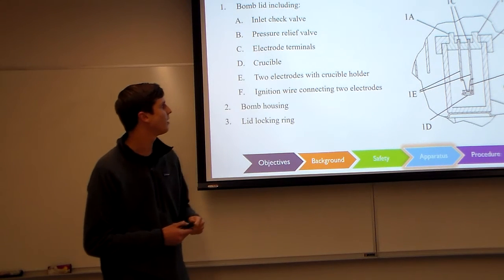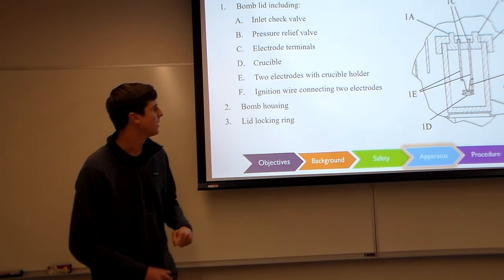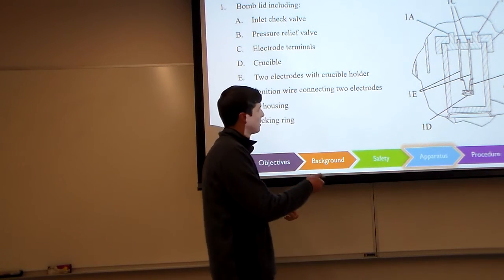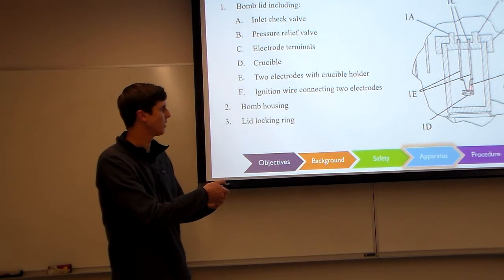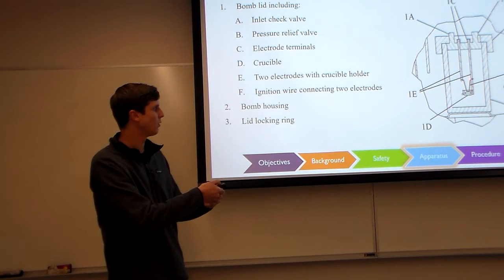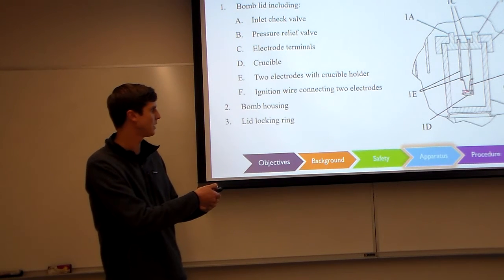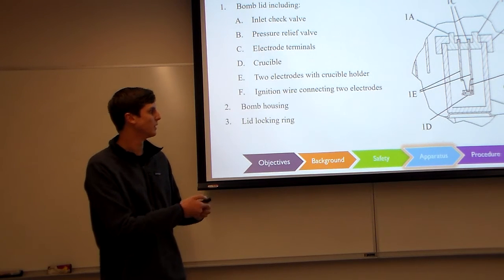1A shows the inlet check valve, and on the other side 1B would be the pressure relief valve. Connecting right here would be the two electrodes, which is holding our fuel sample in the crucible, and we have the 10 centimeters of nichrome wire, which will be here only touching the sample. We also have the lid locking ring, which will be keeping it in place.